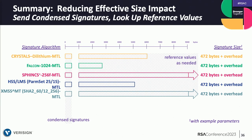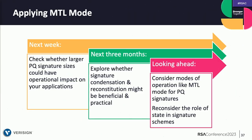Here is what a system looks like with this implementation. On the left-hand side you see the sizes of the condensed signatures; on the right-hand side, the size of the reference values — you get those when you need them. You could fit the condensed signatures into the regular protocol without necessarily increasing the overhead.